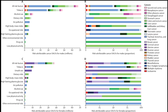B. Family History and Genetics: having a first-degree relative with a history of breast cancer can increase one's risk. Certain gene mutations, such as BRCA1 and BRCA2, are associated with a higher likelihood of developing breast cancer.